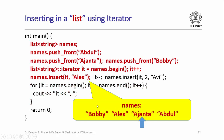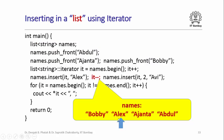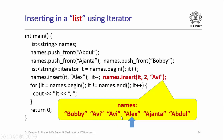Here is another insertion example. After the previous code gives the list Bobby, Alex, Ajanta, Abdul with it still pointing to Ajanta, I say it++ so it now points to Alex. Then names.insert(it, 2, 'Avi') inserts two elements both initialized to 'Avi' just before Alex. The iterator is still pointing to Alex. So now printing out the names gives: Bobby, Avi, Avi, Alex, Ajanta, Abdul.